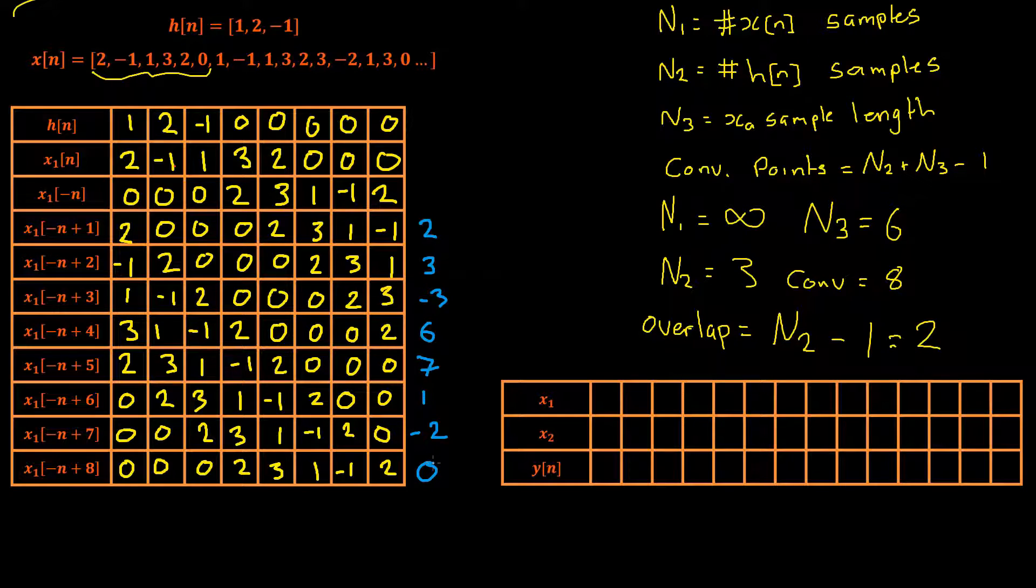And there we have it. We have our output for the convolution of our x1 term. So now we would repeat this exact same process with our next discrete chunk which would go from the 1 through to the 3.